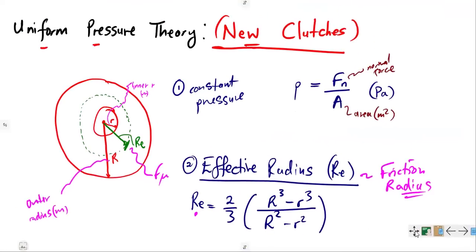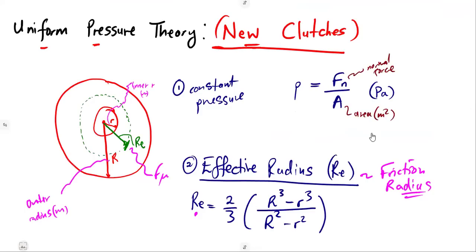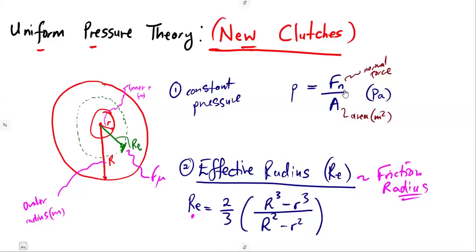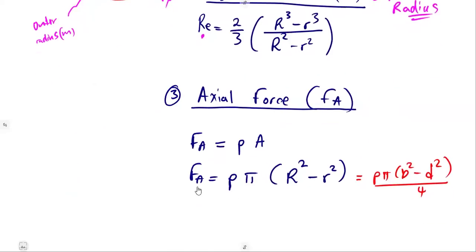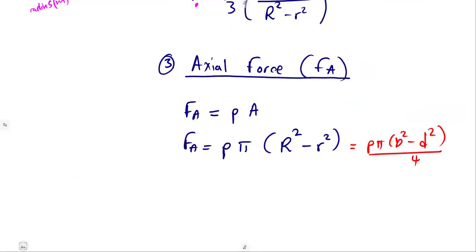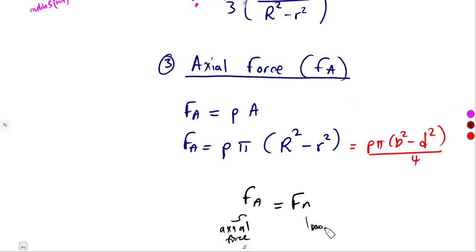Under the uniform pressure theory, be very careful — you are dealing with a new clutch. We know the normal force from the pressure formula. The axial force has its own formula. For a new clutch under uniform pressure, the axial force is simply equal to the normal force.